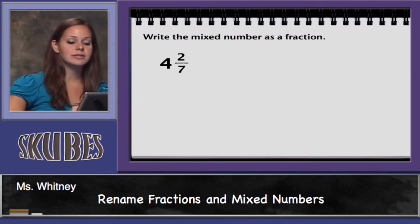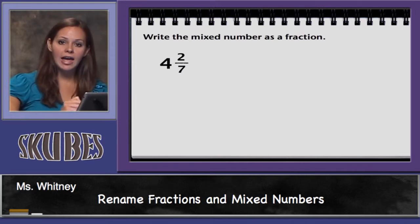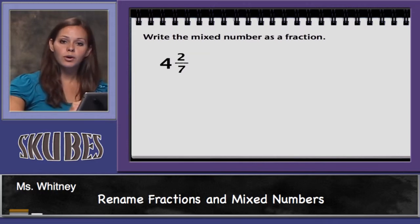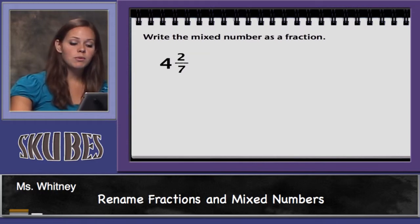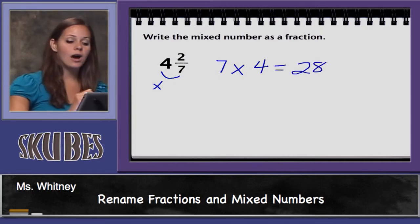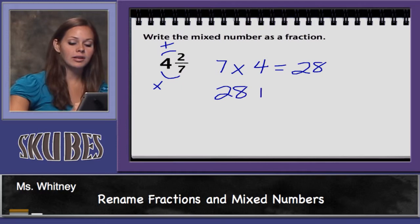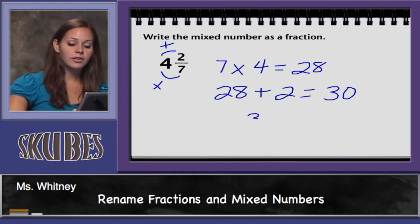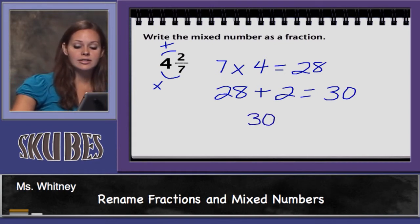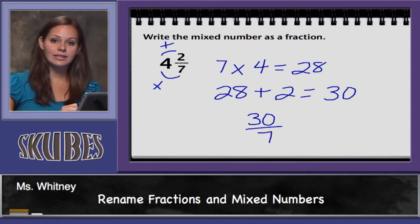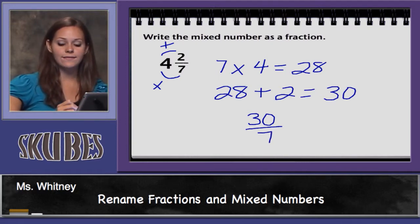Let's practice some other examples. For this one, we are going to write the mixed number as a fraction. The mixed number is four and two-sevenths. So, first we will multiply our denominator times our whole number. Seven times four equals twenty-eight. Now, we must add our numerator. Twenty-eight plus two equals thirty. We will write our answer, thirty, over our denominator, seven. So, we have thirty-sevenths is equal to four and two-sevenths.